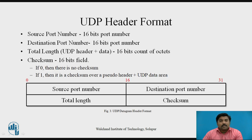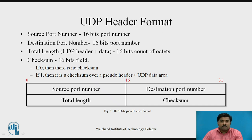Let's see each field present in the header one by one. The diagram shows there are 4 fields. First is the source port number, which is a 16-bit field. Second is the destination port number, also 16 bits. Third is the total length, which is 16 bits representing the total length of the UDP header plus data. The last field is the checksum, also 16 bits — if it is 0, no checksum is required; if it is 1, it is a checksum over a pseudo header plus the UDP data area.